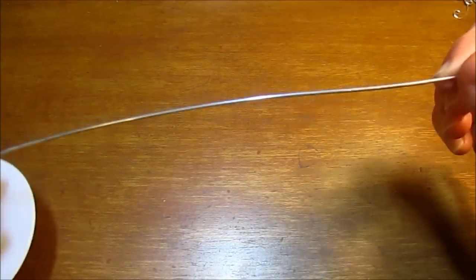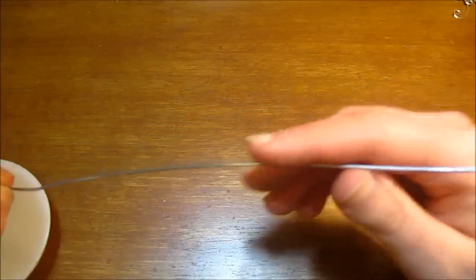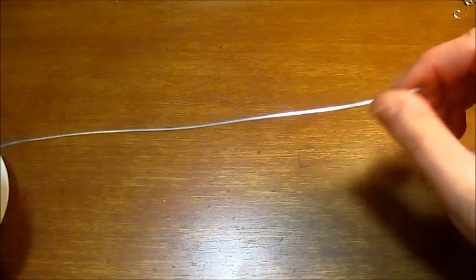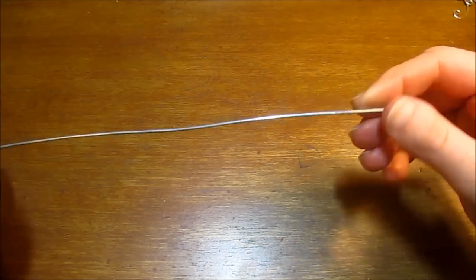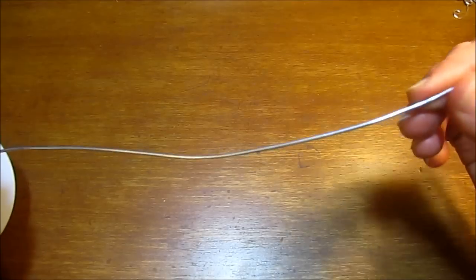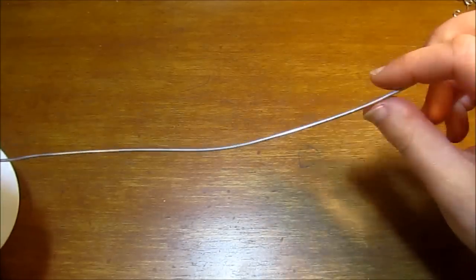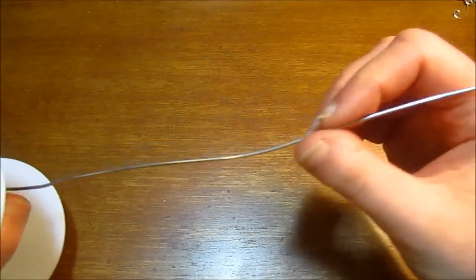So there you go, that is the easiest way that I know of to straighten out wire that has any kinks or bends in it. So I hope you found this mini tutorial helpful. And stay tuned for more project tutorials. I do have many more in the works. I'm hoping to get one up soon.